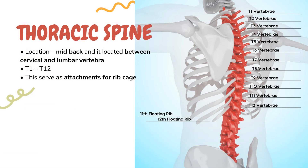Thoracic section. This is located at the chest level, between the cervical and lumbar vertebra. This is also called mid-back. In this section, 12 bones are there — T1 to T12. This serves as attachments for the ribcage.